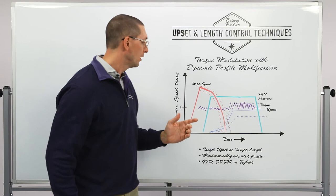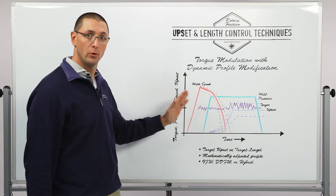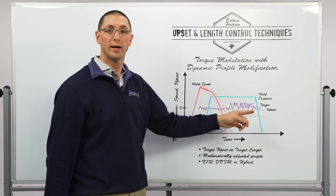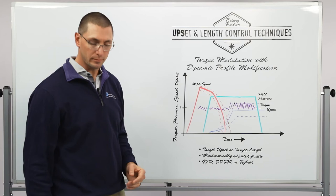So we look at a standard inertia weld again and we let this weld happen with no torque modulation, no pressure modulation, just a standard inertia weld and we record a profile of upset versus time in order to use that to help generate an error signal in the future.